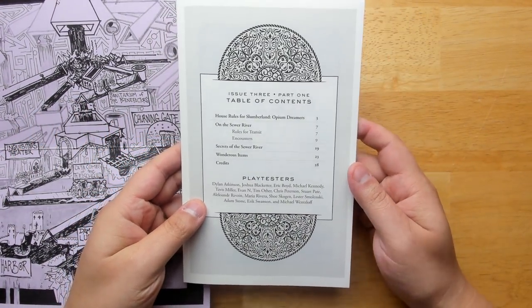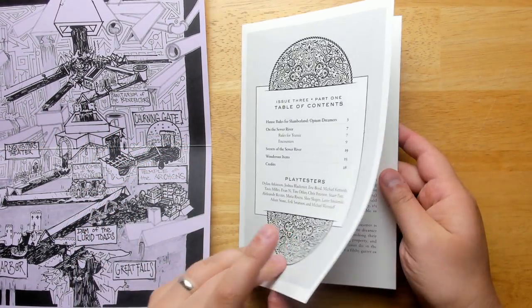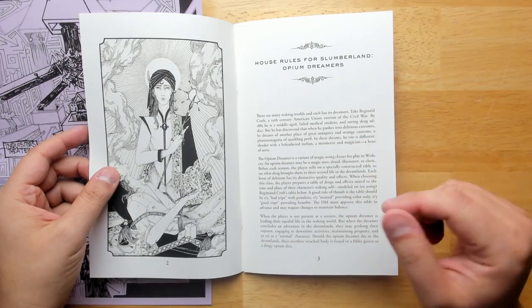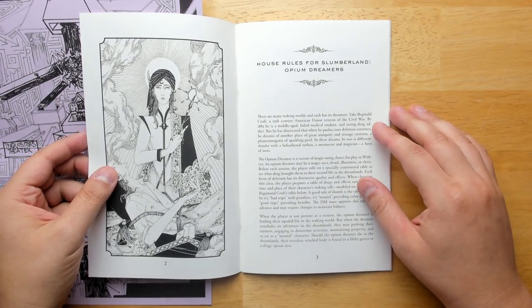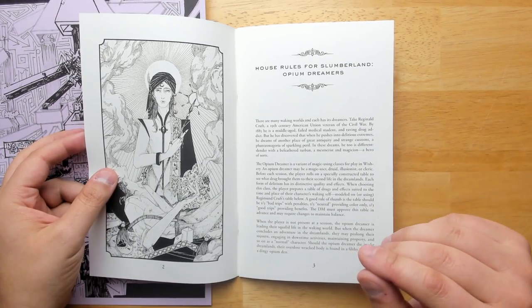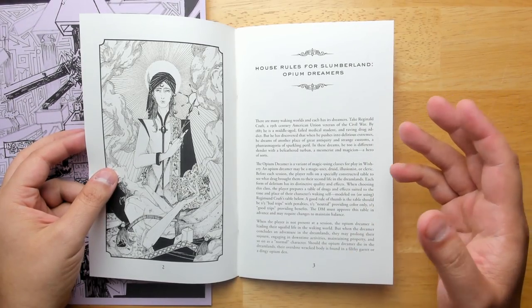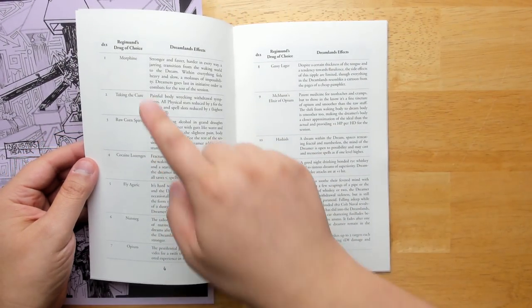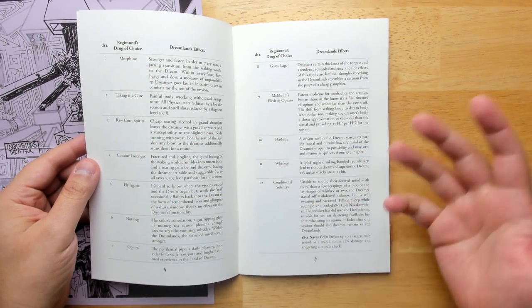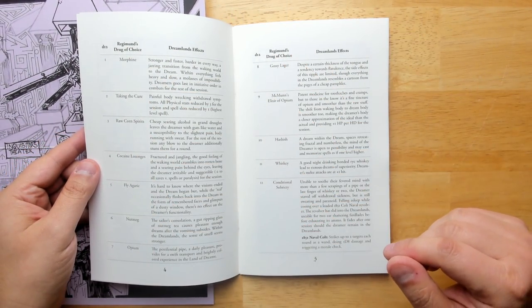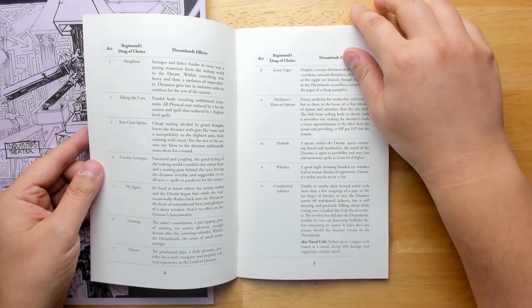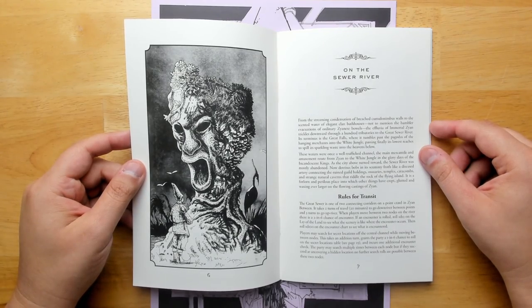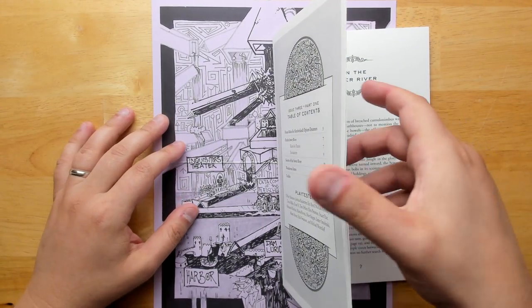So here we have our table of contents for part one. First of all, we have opium dreamers, which is a new class that you can get. All the different classes are dream-themed. So these are dreamers that can enter the dreamlands through taking drugs of different kinds. And so for here, we have an example of different types of drugs that can get you there and the effects that it gives you when you are in the dreamlands. We are going to be traveling on the sewer river. This is part of a journey that was begun in previous issues.